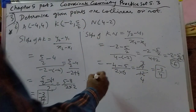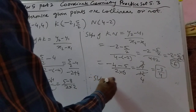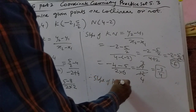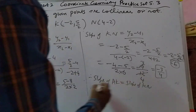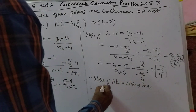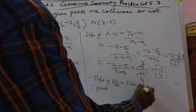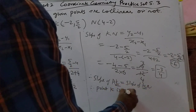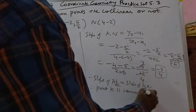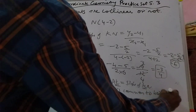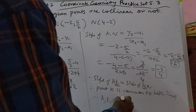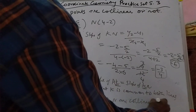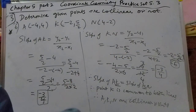Both slopes are equal. Therefore slope of AK is equal to slope of KN. Point K is common to both lines; therefore A, K, N are collinear points. Next we will do the fourth problem.